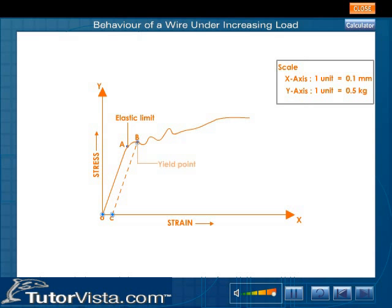The point B is called the yield point or commercial elastic point. In the portion BD of the graph, the strain increases rapidly even for a small increase in stress. Therefore, the graph is irregular and wavy.